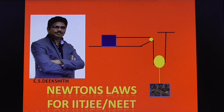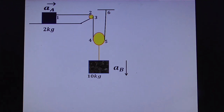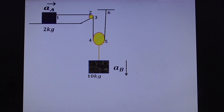Friends, observe this question from Newton's Laws — useful for IIT JEE as well as NEET. Observe the diagram: 2 kg mass and 10 kg mass with two pulleys. One is a fixed pulley and the second is a movable pulley, supported by a string. We have to find the acceleration of A, acceleration of B, and tension T.